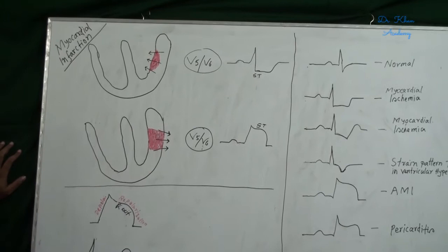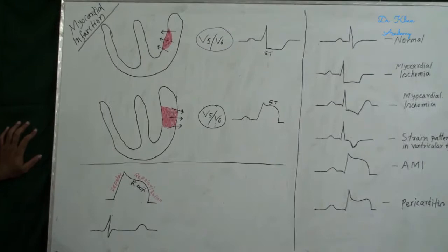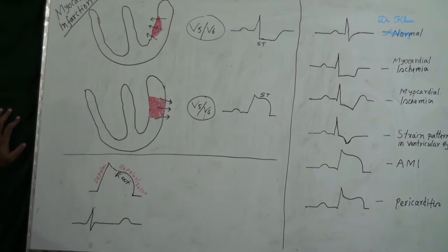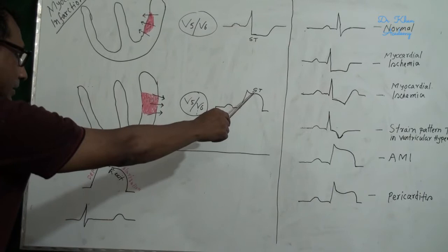But when full thickness injury occurs, that is transmural myocardial infarction occurs, current flows from the infected area to the uninfected area to the chest lead, that is outwards. This chest lead shows the ST elevations. These elevations convexity is upwards, convexity faces upwards.